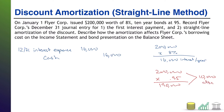When we do straight line amortization, we get rid of that discount equally over time. This bond is going to last 10 years, which means we divide that $10,000 discount by 10 years and we are going to get rid of it at a rate of $1,000 per year — that is our amortization.